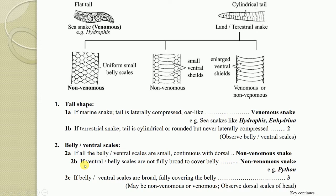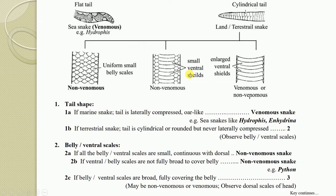Key 2B: If the ventral or belly scales are not fully broad enough to cover the belly — as seen in the second diagram where ventral shields do not completely overlap the belly region — this is again an indication of a non-venomous snake. For example, the python, also known in Marathi as rock python or azgar, has ventral shields that do not fully cover the belly part, and it is a non-venomous snake.